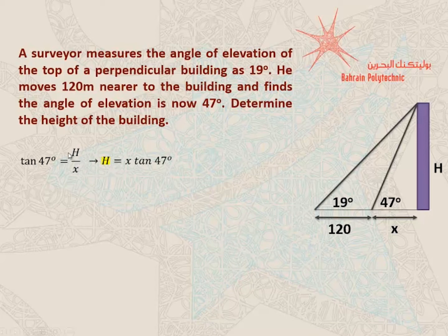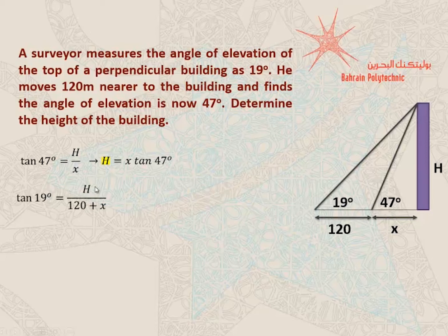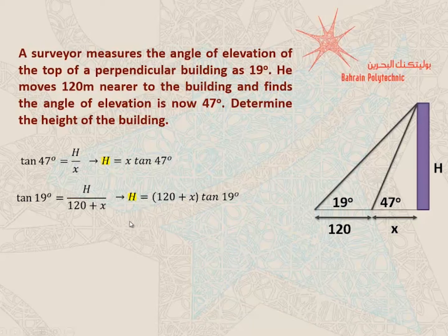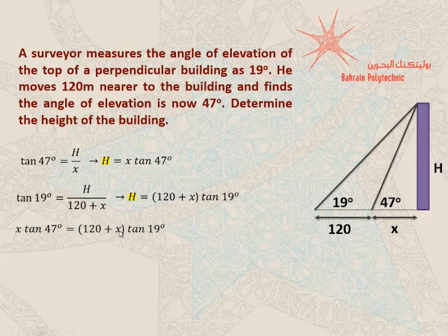I'm going to cross multiply to get h equals x multiplied by tan of 47. I'm going to do exactly the same thing for the bigger triangle. I've got 19 degrees, the opposite is h, and the adjacent is 120 plus x. So tan of 19 is equal to h over 120 plus x. Cross multiplying gives h equal to 120 plus x multiplied by tan of 19. Both equations have h on one side, and since it's the same h, I can equate these two expressions: x tan 47 equals 120 plus x multiplied by tan 19. This equation has only one variable, x.